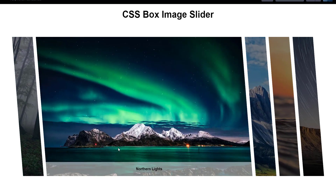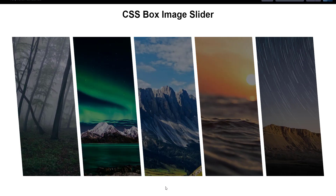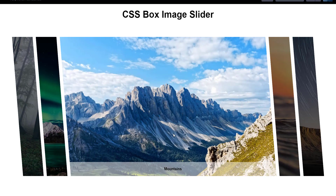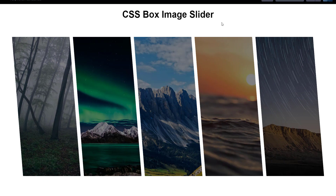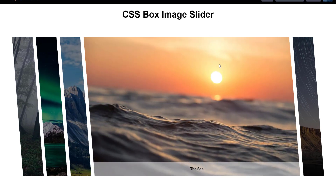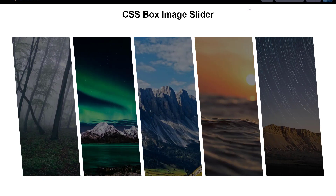When hovering on an image, you can see it in the expanding format and we have a caption as well. Whenever we hover on any image, the lighting is also changing — previously it was dark and now it is getting lightened up. We are going to create this with HTML and CSS only.